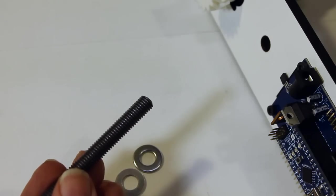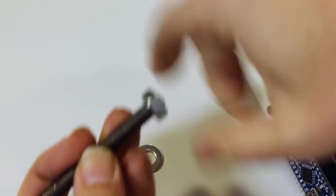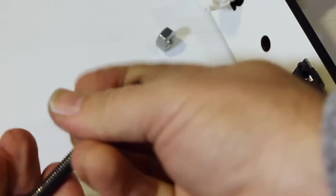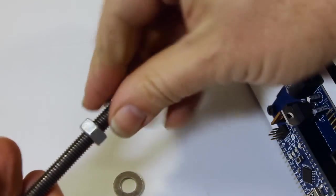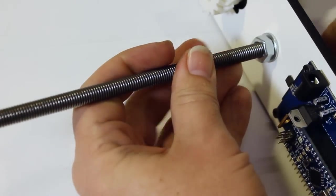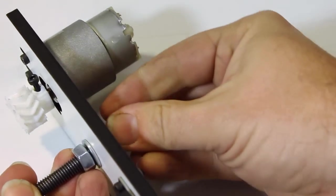Take the threaded rod, two of the M8 nuts, and the M8 washers. First, put on one of the nuts and one of the washers, and put it through the hole above the electronics. Then add the other nut and washer to the other side.